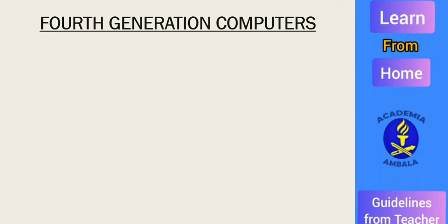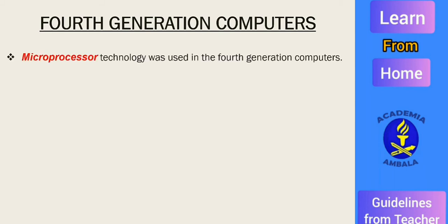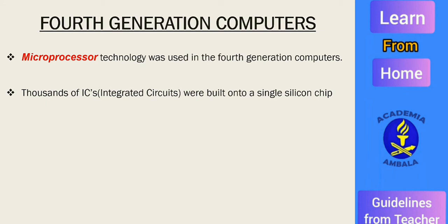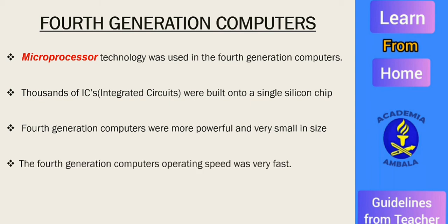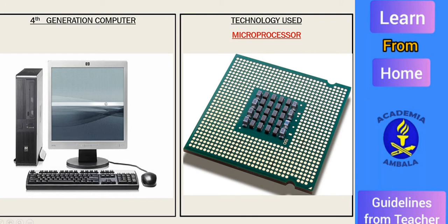Fourth generation computers used microprocessor technology, where thousands of integrated circuits were built onto a single silicon chip. Fourth generation computers were more powerful and very small in size, with a very fast operating speed. Here you can see how the computer's size changed from room-size computers to a desktop or laptop, and the microprocessor technology used in them.